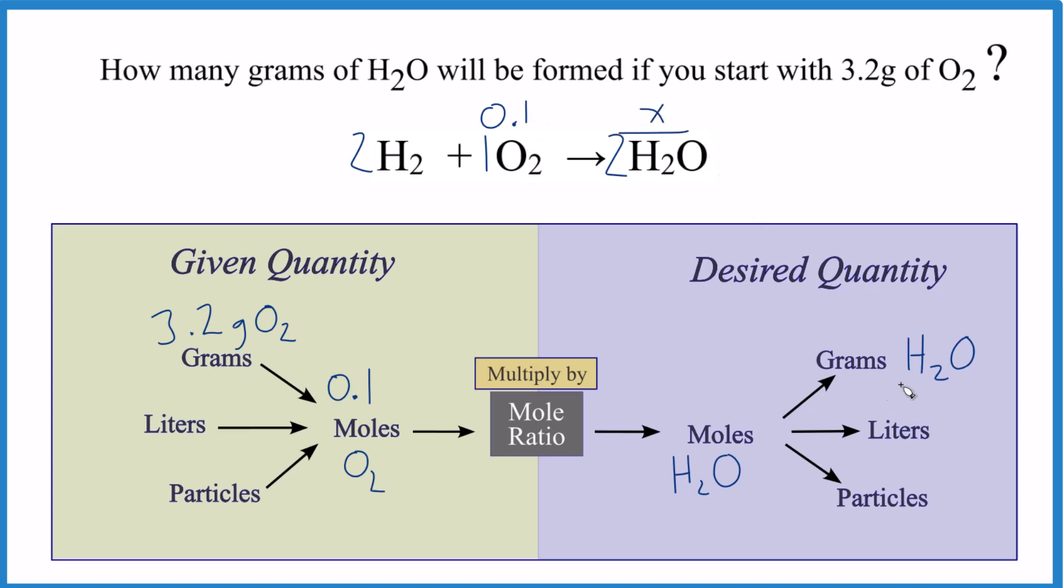So we could say that we have 0.1 moles of O2 and we don't know how many moles of H2O we're going to get because that's what we're looking for here. Then we can convert it to grams. This is just a ratio, so I could cross multiply and solve for x. So 1 times x—that's x. 0.1 times 2 is 0.2.